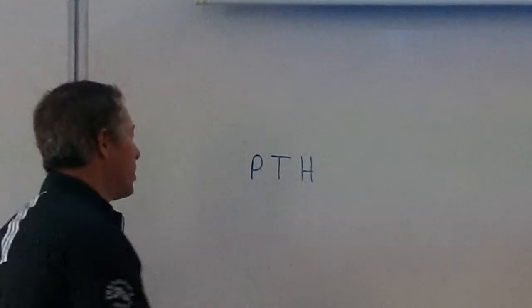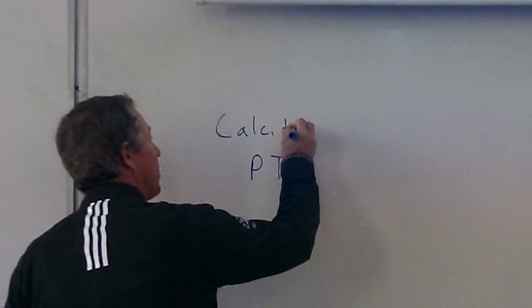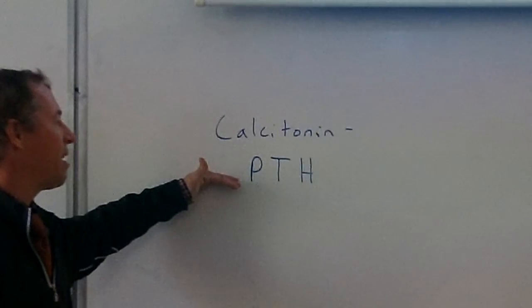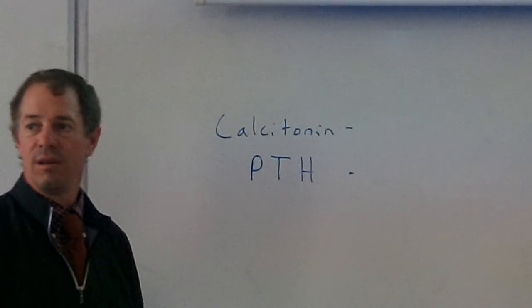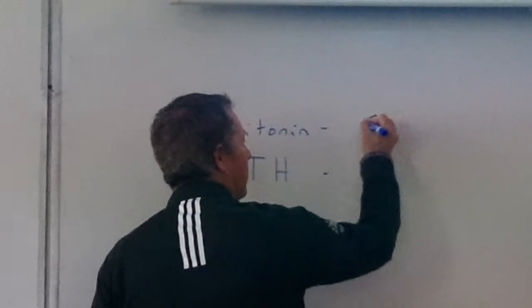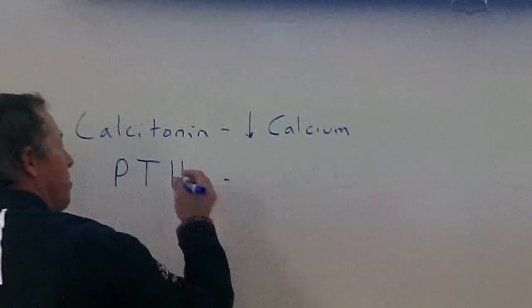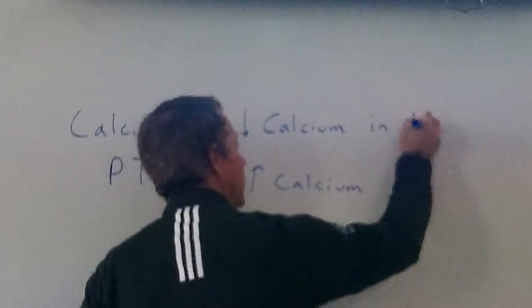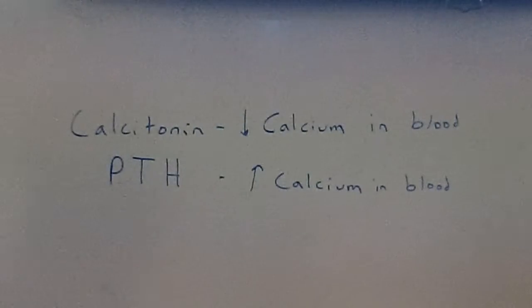The parathyroid gland releases PTH, parathyroid hormone. And what does the parathyroid hormone do? Do you remember? It does have to do with calcitonin, right? Yes, it acts actually opposite to another hormone called calcitonin. Calcitonin is emitted by the thyroid gland.